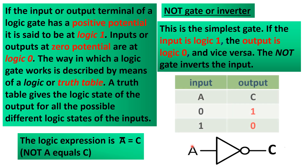This is the logic diagram of a NOT gate or an inverter. There is a small circle after that triangular symbol. Always look for that symbol because it means that you are talking about a NOT gate or an inverter. There is also what you call a logic expression, and for a NOT gate, it is written as A with a bar above the symbol A equals C, but this is read as NOT A equals C.